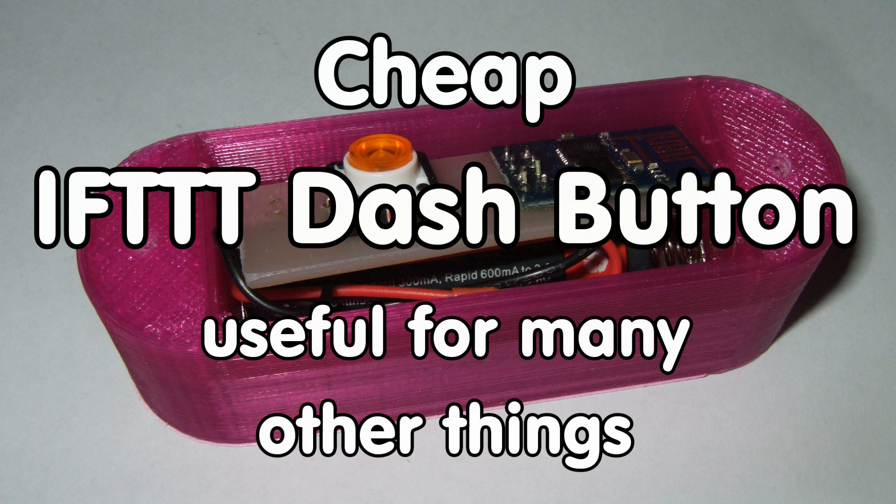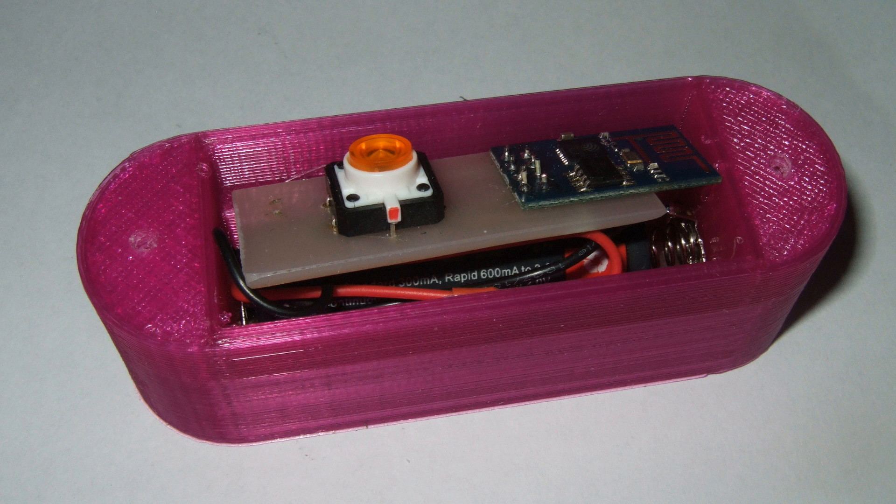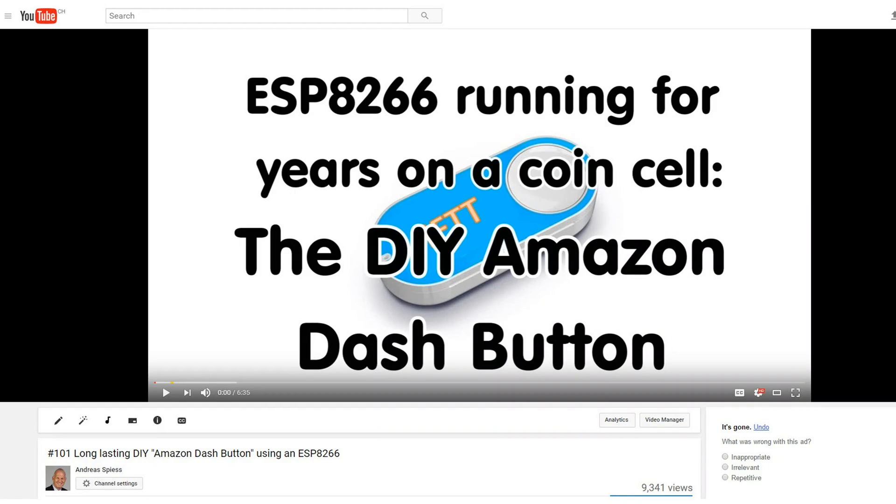In video number 101, I showed a principle on how to save energy for extremely low-powered devices using a mechanical switch. This principle is necessary if your device uses any sensors or circuitry other than the ESP itself. I used an IFTTT dash button as a simple example to show the principle. Since then, many viewers asked about the dash button itself. So today I will finish this button using another low-power principle of the ESP.